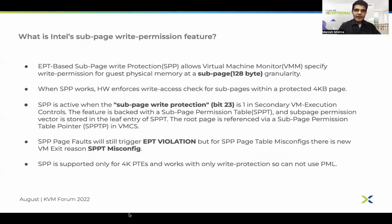Bit 62 in the L1 entry of EPT indicates the SPP bit. Any VM exit due to SPP protection still comes through an EPT violation, and you need to check the page tables to figure out if the violation was due to normal write protection or sub-page level protection, and act accordingly. But if SPP page tables are not properly configured, we get a new VM exit which is SPPT misconfig.